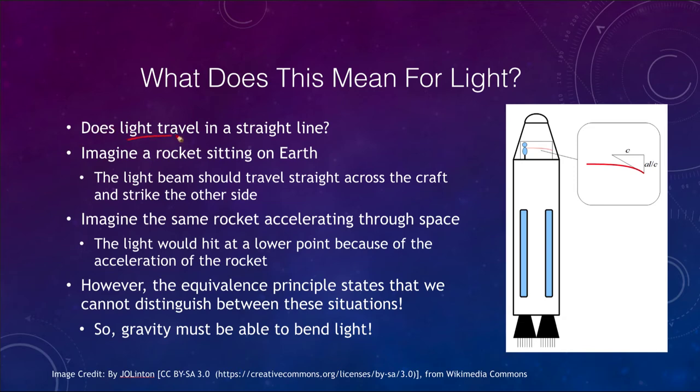Does light travel in a straight line? We tend to think of light as traveling in a straight line, but this is not always the case. If we imagine a rocket sitting here on Earth, the light beam should travel straight across the craft and strike the other side. So you would expect if you're shining a flashlight that it will go straight across and strike the other side at the same level.